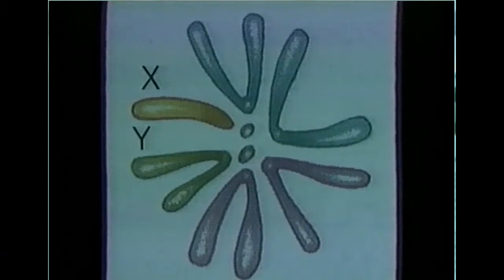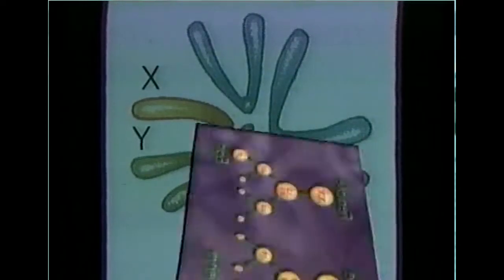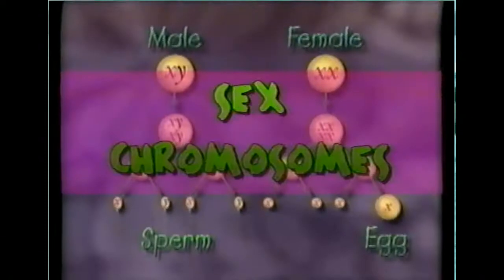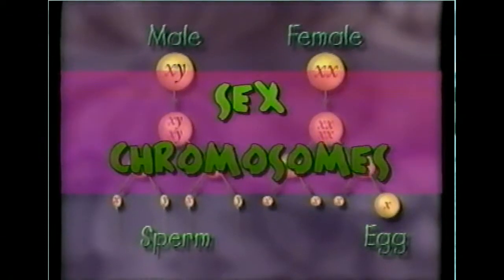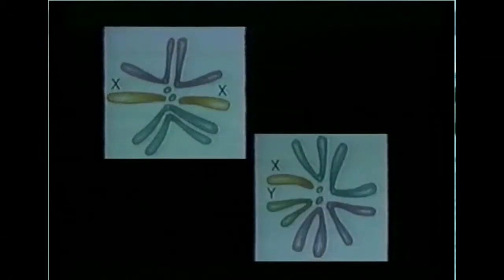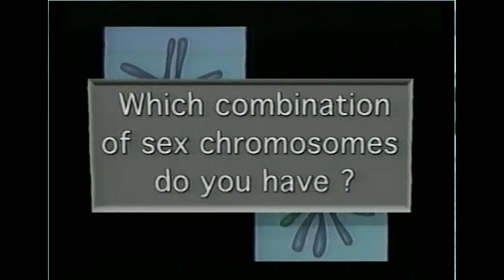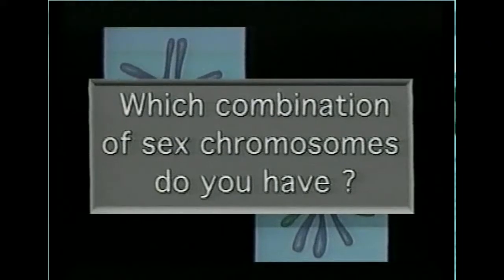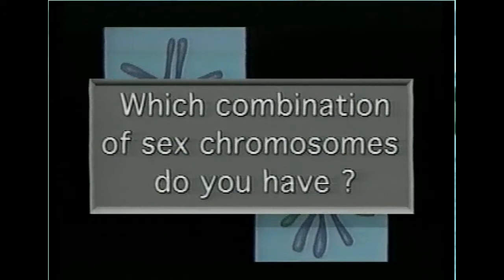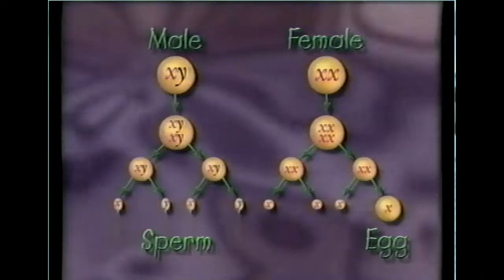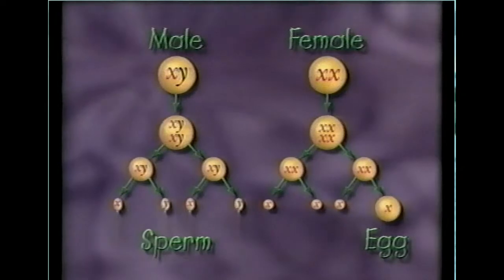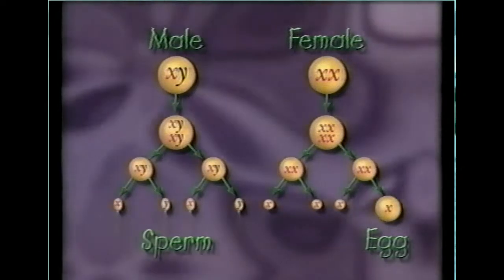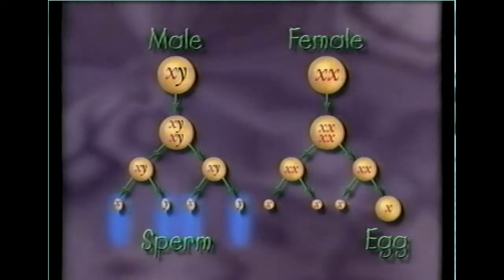Morgan's experiments led him to the conclusion that the X and Y chromosomes determine the sex of an organism. For this reason, they are known as the sex chromosomes. In males, meiosis results in sperm cells that have either an X or a Y chromosome.